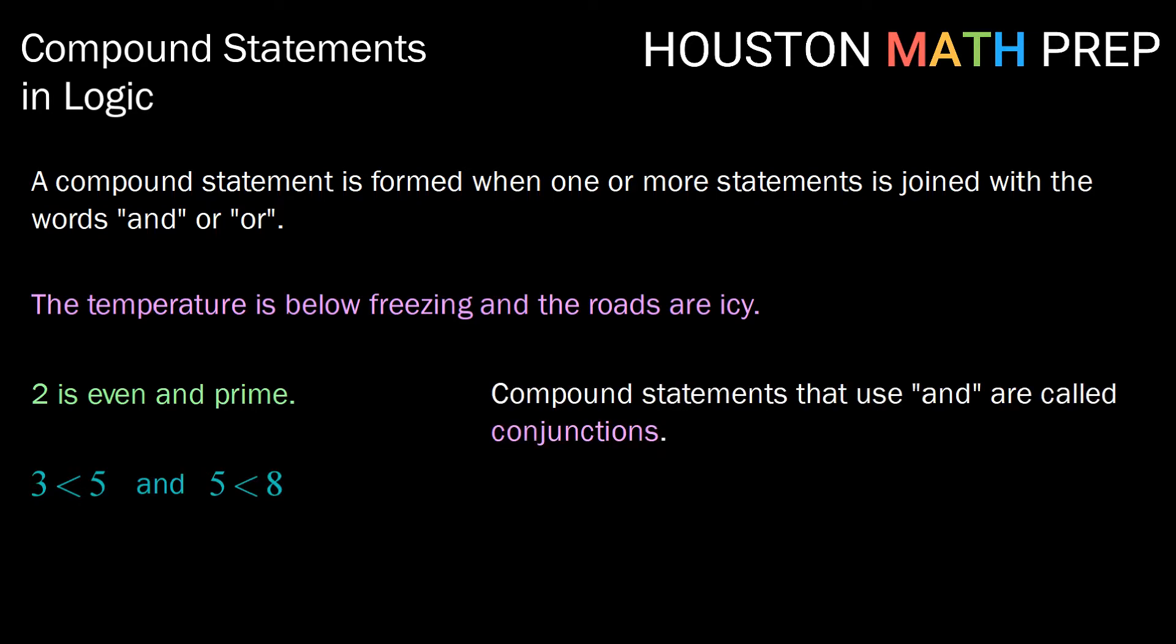Compound statements that use and are called conjunctions. We denote conjunctions using P this up arrow Q. So you can remember that by thinking about and starts with A and that symbol looks a little bit like a capital A.